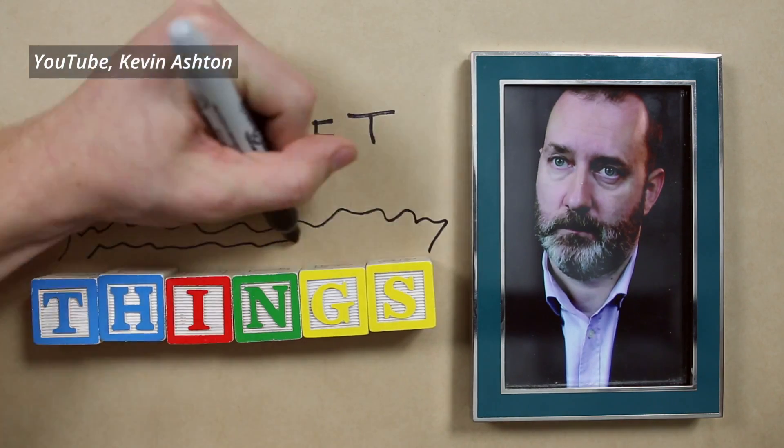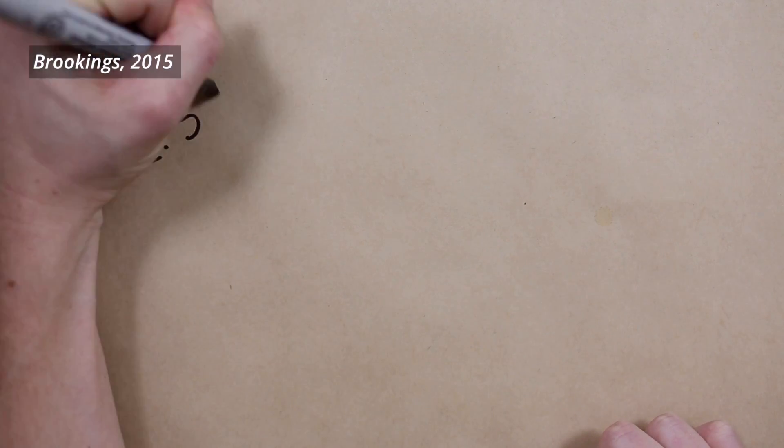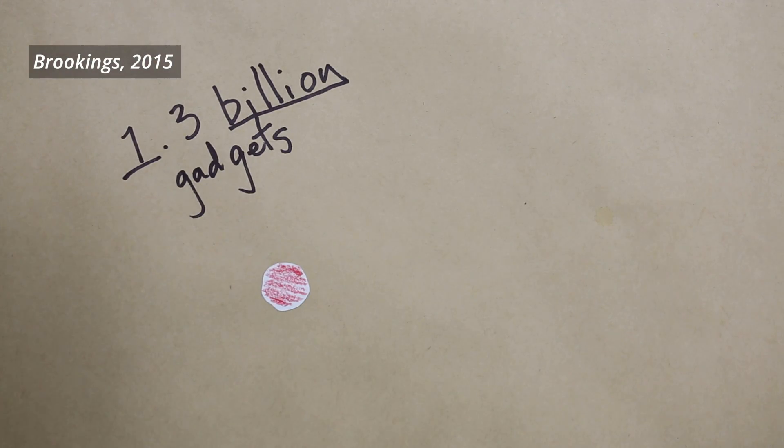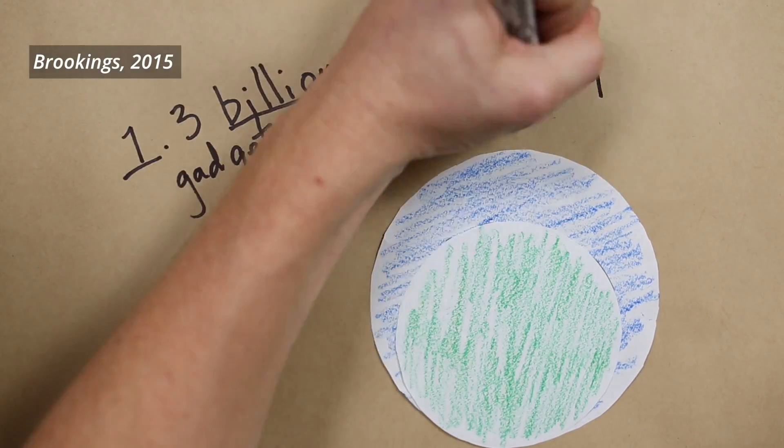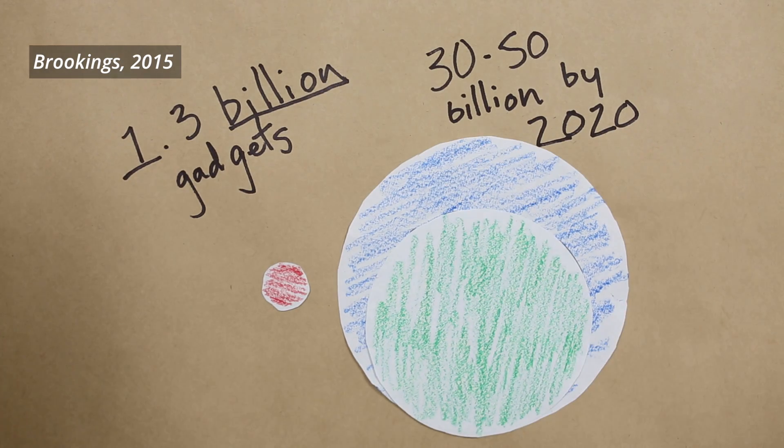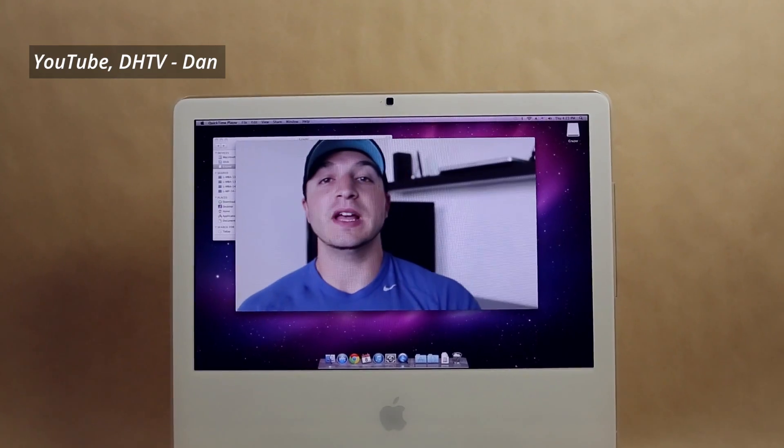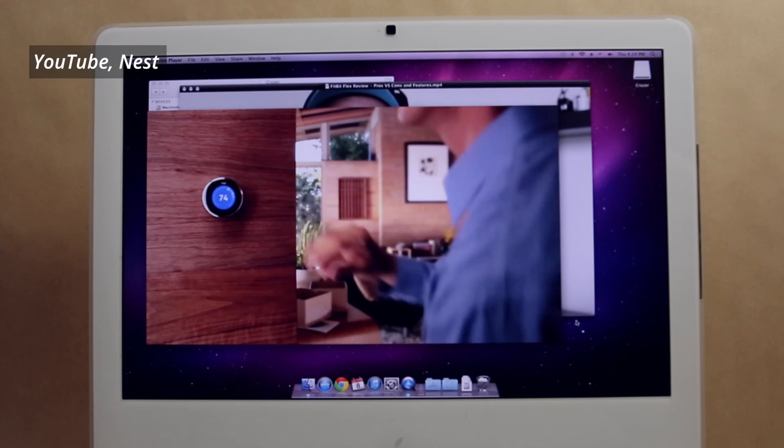Today, the Internet of Things is a hot term in the tech world. There are now more than 1.3 billion gadgets connected to the internet, and we can expect this number to grow to between 30 and 50 billion by 2020. Some of these devices are useful, like fitness trackers, smart thermostats, or home energy monitors.